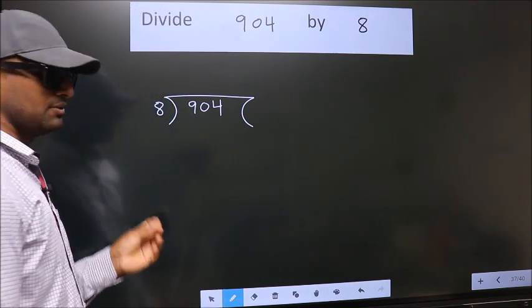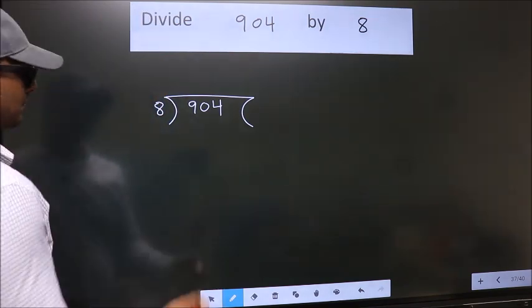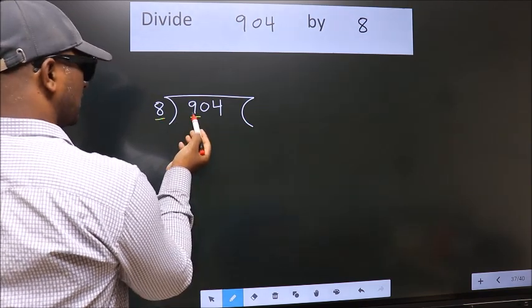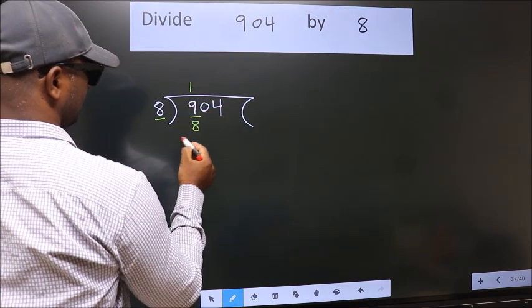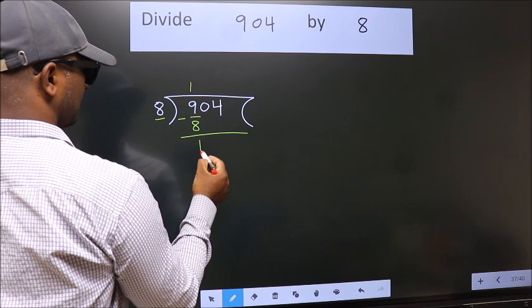This is your step 1. Next, here we have 9, here 8. A number close to 9 in the 8 table is 8 once 8. Now we should subtract. We get 1.